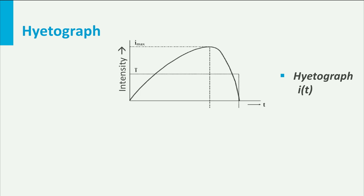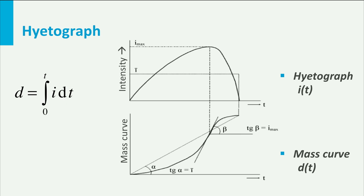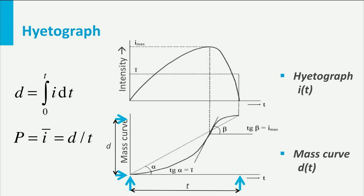The hyattograph is the Greek word to describe the graph of the rainfall intensity as a function of time. The mass curve is the integral of this curve, and the precipitation over the duration t is found by connecting two points on the curve a distance t apart. The maximum intensity corresponds with the steeper slope of the mass curve.